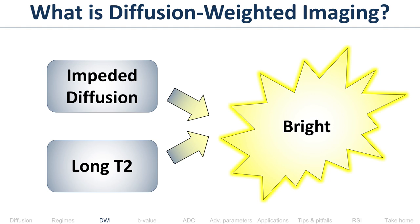In the liver it works out really well, except for technical challenges. Most tumors in the liver have both impeded diffusion and long T2. Because diffusion-weighted imaging is both diffusion-weighted and T2-weighted, both the impeded diffusion and the long T2 make tumors look bright — they act synergistically. That's why, at its best, diffusion-weighted imaging in the liver is so powerful: liver tumors usually have impeded diffusion and long T2, acting synergistically. Tumors in the liver look very bright.